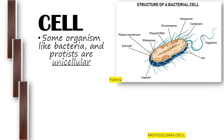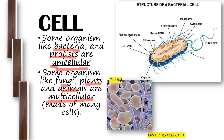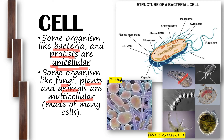Some organisms like bacteria and protozoa are unicellular, meaning they consist of one single cell. Some organisms like fungi, plants, and animals are considered multicellular — they are made of many cells. This means human beings are made up of trillions or billions of cells. Here is an example of fungi and an example of a protozoan.